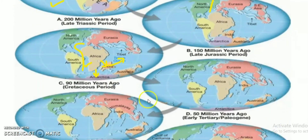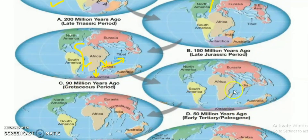Then, about 50 million years ago, India started to move north. We can see that 50 million years ago this northward movement began.